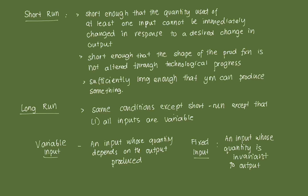The most common fixed input is land. The bakery, whether it produces one loaf of bread or a hundred loaves of bread, its land remains theirs.